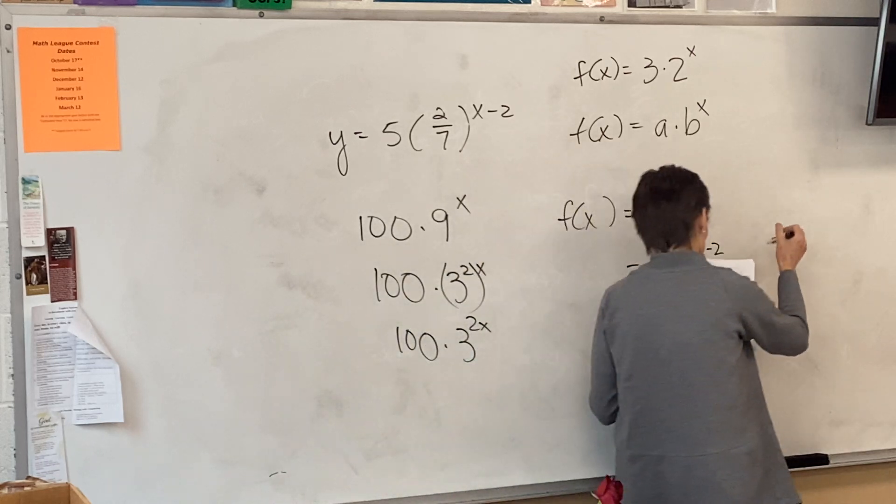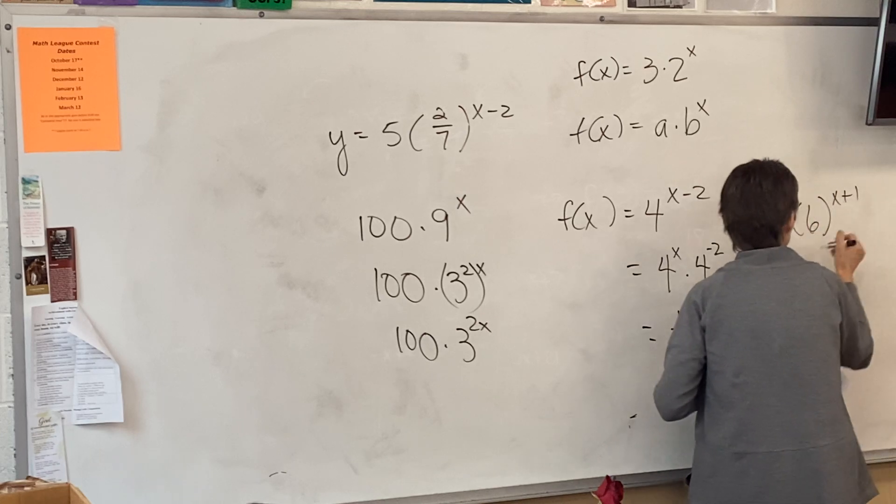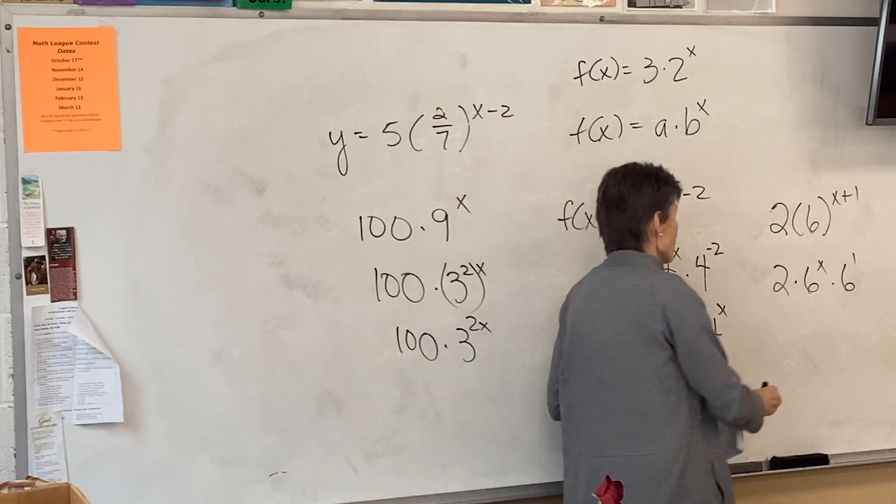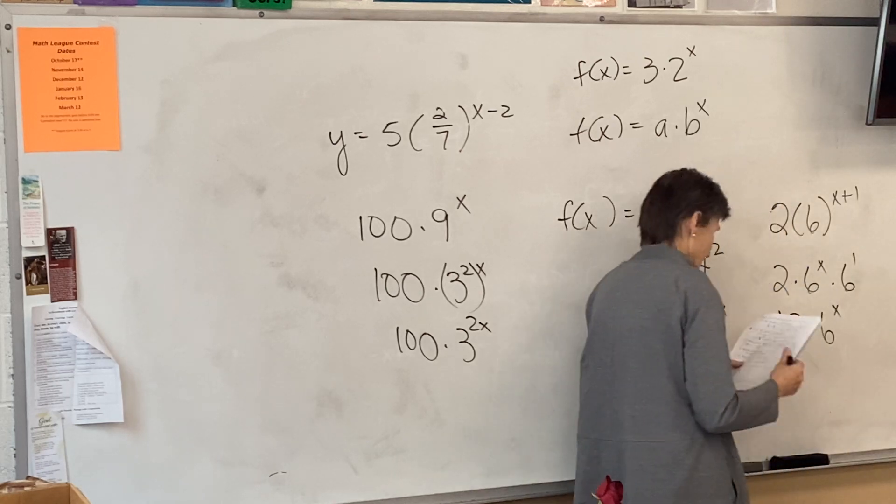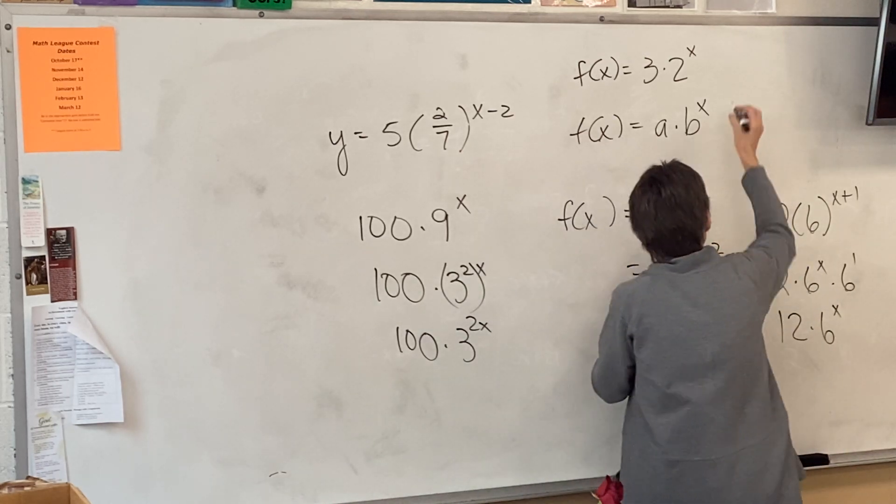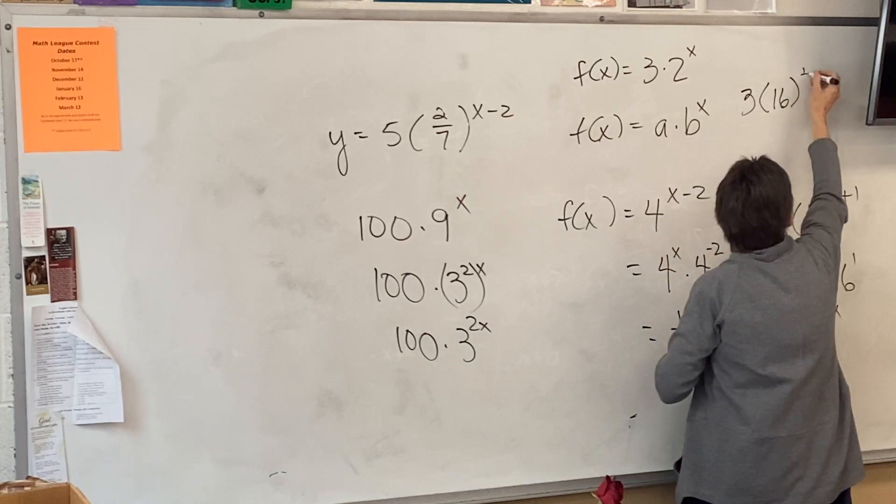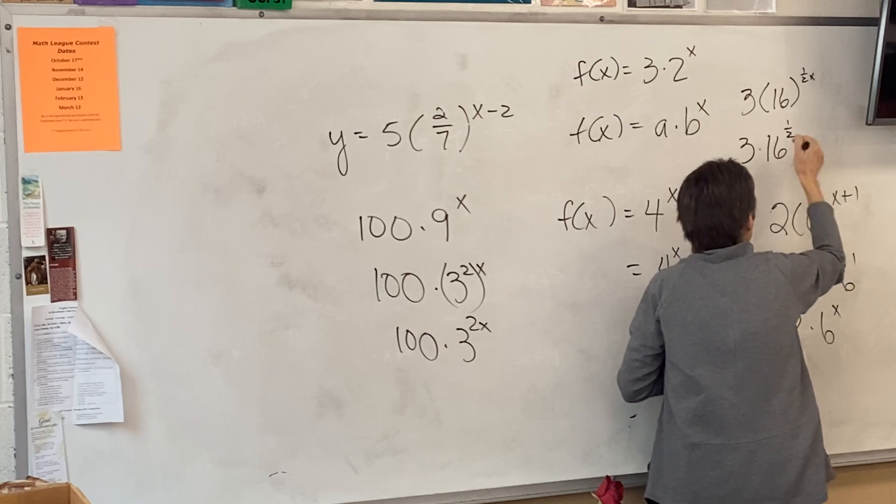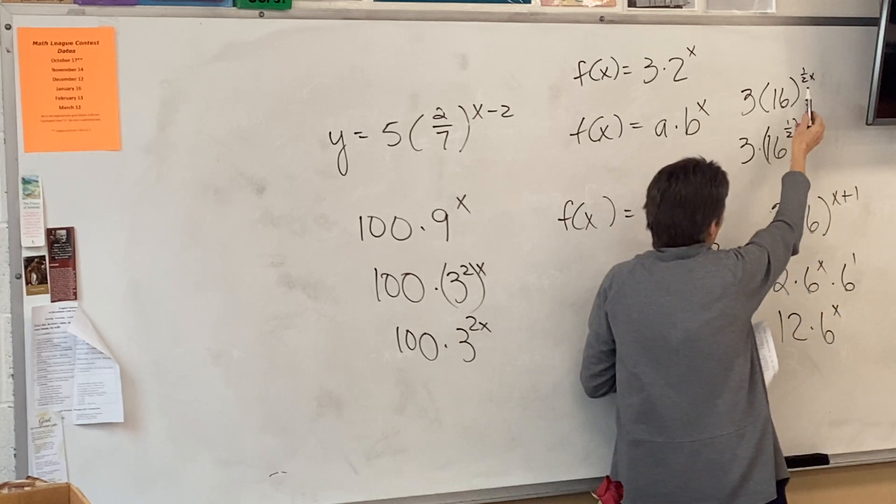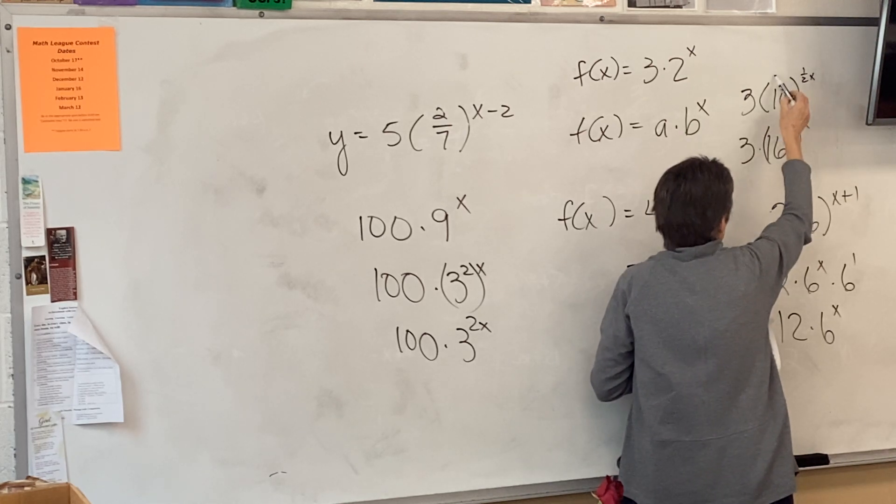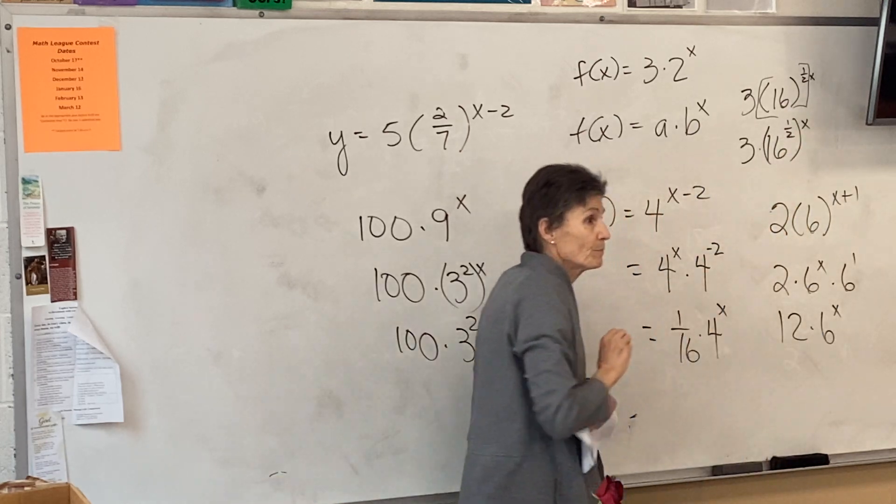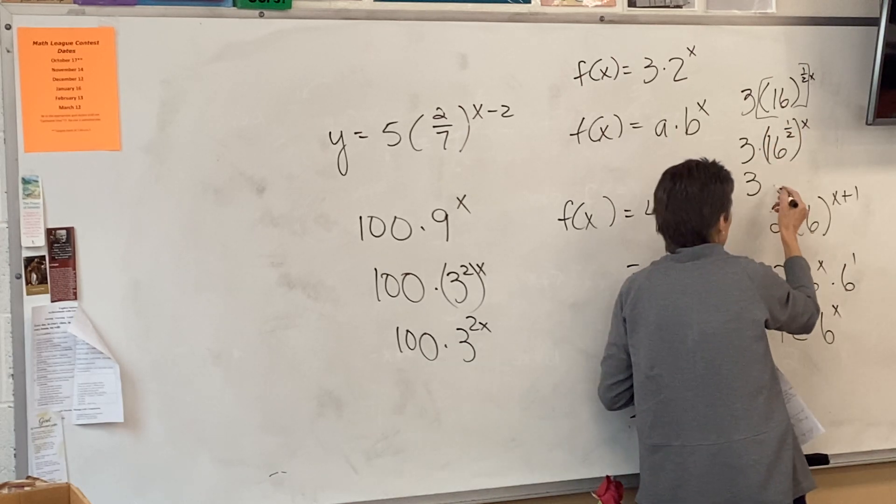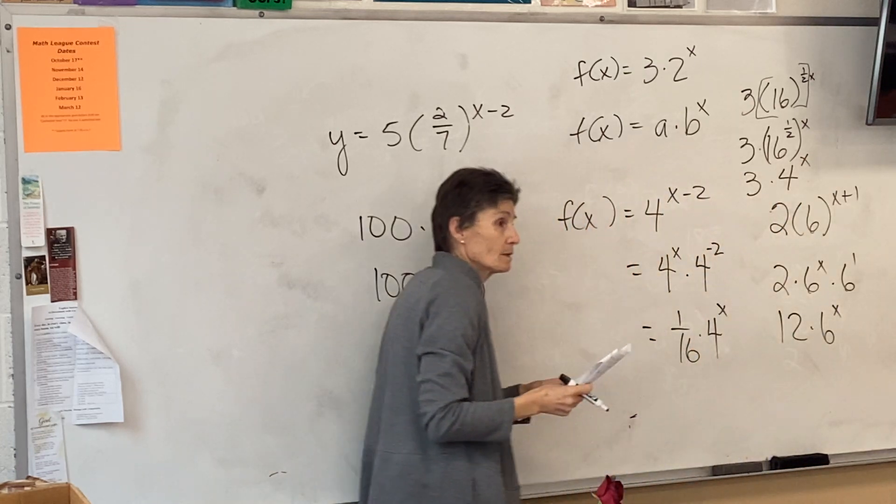b would be the same thing. It's 2 times 6 to the x plus 1, which is 2 times 6 to the x times 6 to the 1. So it's 12 times 6 to the x. And then c, same thing. 3 times 16 to the 1 half x. So that's 3 times 16 to the 1 half to the x. When you have that double exponent, we've done this a lot. You can separate the exponents and make it 16 to the 1 half and then to the x. So this is 3 times 4 to the x.